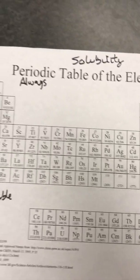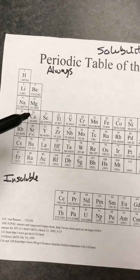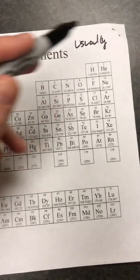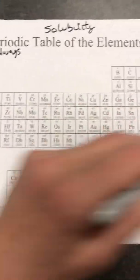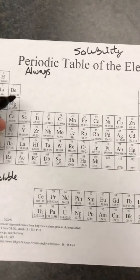So on my left-hand side of the periodic table I'm going to write always, on my right hand side I'm going to write usually, and then down here I'm going to write insoluble. We're going to fill in some gaps of knowledge right now. Let's go ahead and start with the always.